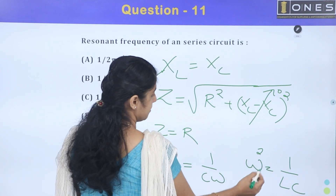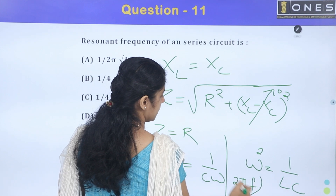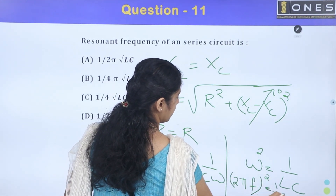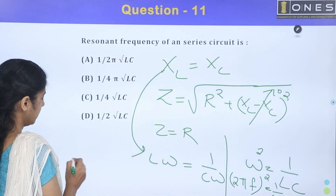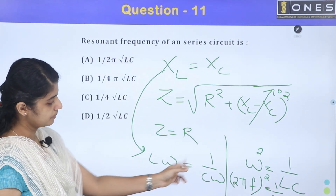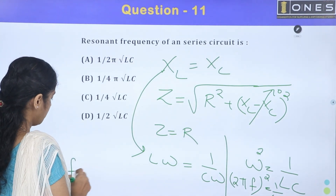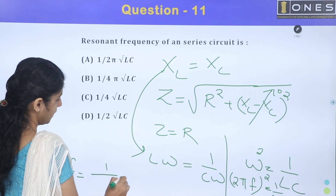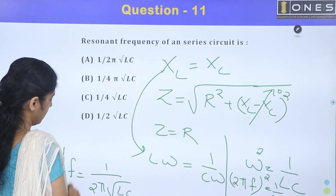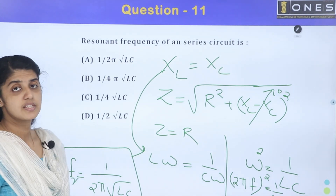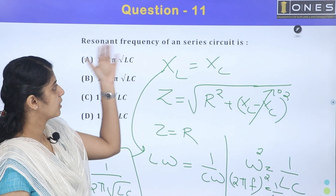Since ω = 2πf, we get (2πf)² = 1/(LC). Therefore, the resonance frequency f = 1/(2π√LC). This is the resonance frequency formula for a series RLC circuit.